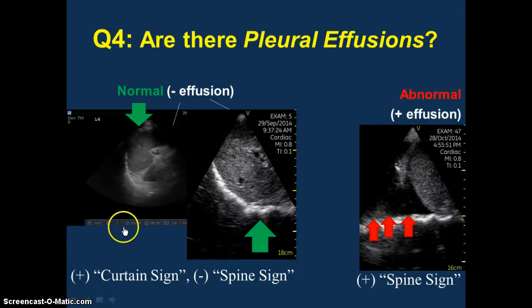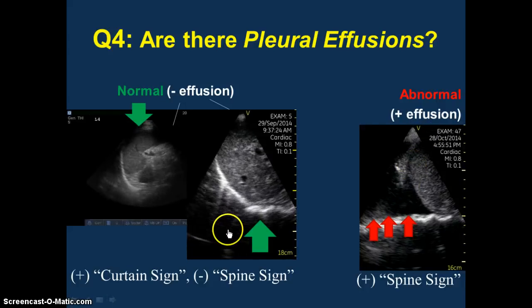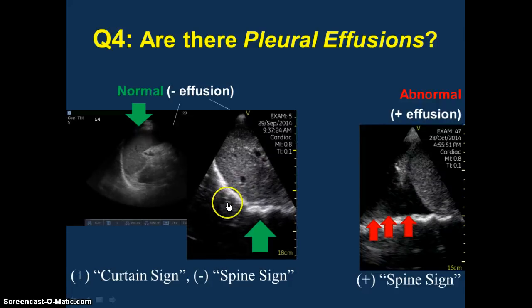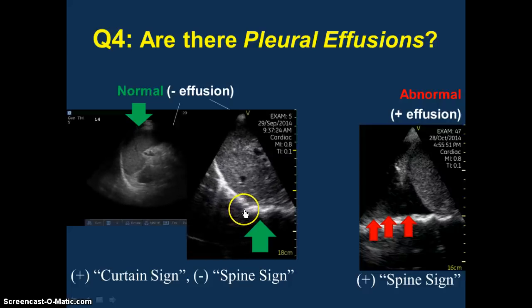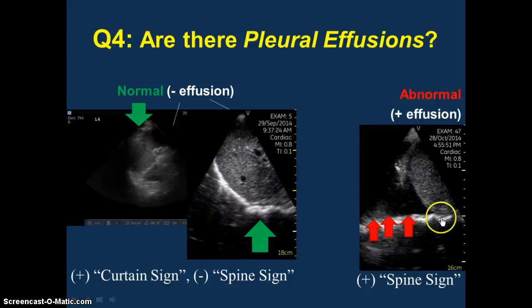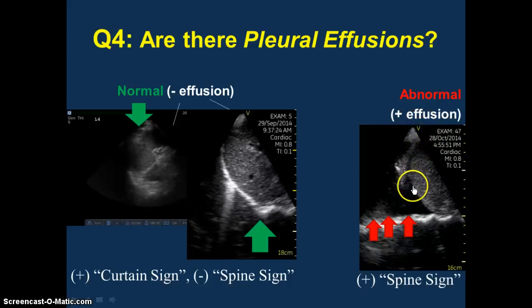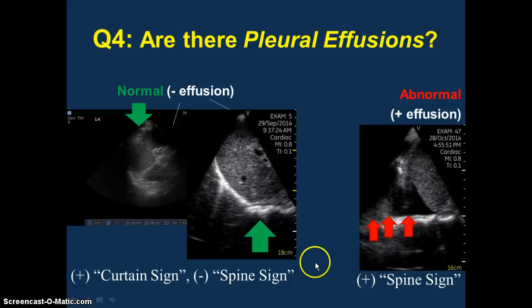Here you have an example of the curtain sign, where aerated lung is obscuring everything behind it. When the lung is surrounded by pleural fluid, you don't get that curtain sign because the ultrasound beam is actually able to travel through pleural effusion and show you what's on the other side. This is an example where it looks like there's liver extending past the anatomic boundary of the spine — a mirror image artifact suggestive of normal aerated lung with no effusion. When you can see the spine above the diaphragm, that means the ultrasound beams are going through the liver, through the pleural effusion, and showing you what's on the other side — that's a positive spine sign suggestive of an effusion. It can be very obvious, or it can also be subtle.